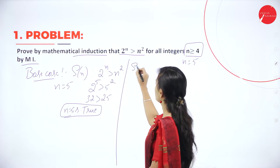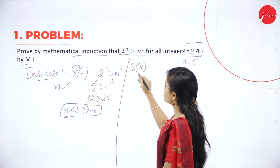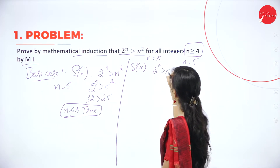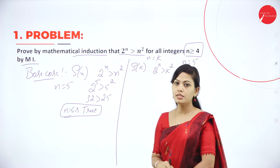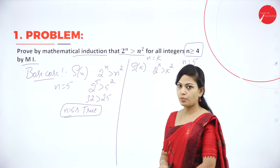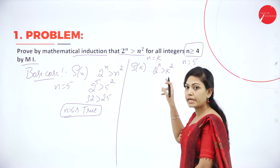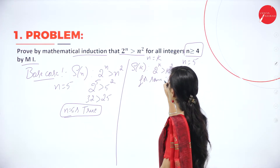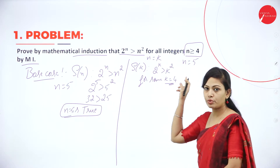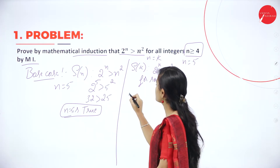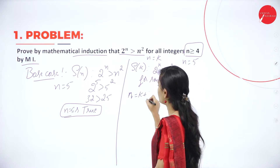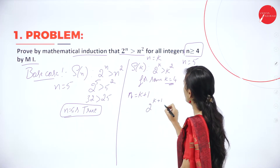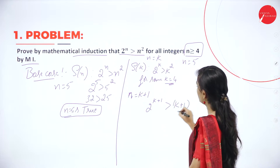The next step is s of k. Suppose n is equal to k, then 2 power k is greater than k square — this is true for k greater than or equal to 4. And the next step is n equal to k plus 1: we have to prove that 2 power k plus 1 is greater than k plus 1 whole square.